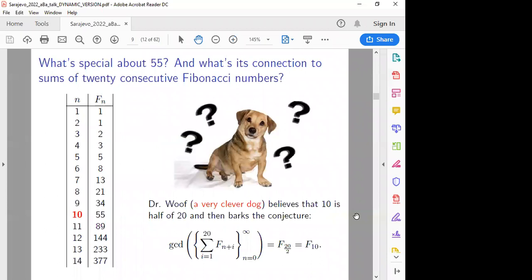So what's special about 55 and what's its connection to the sum of 20 consecutive Fibonacci numbers? So this is my other collaborator named Dr. Wolf, who's a very clever dog, as you'll see. And Dr. Wolf believes that 10 is half of 20. And I have confirmed that with computer evidence using mathematics. Indeed, that is true. 10 is half of 20. And then he barked the following: the GCD of this infinite sequence of sums of F20 over 2, and the D does have 10. Okay. Proof by dog.